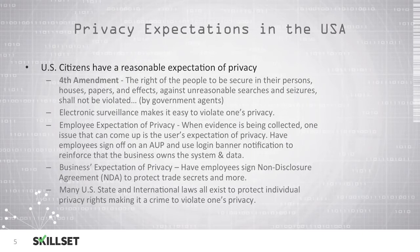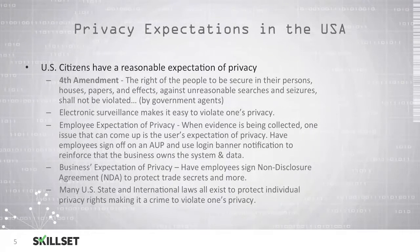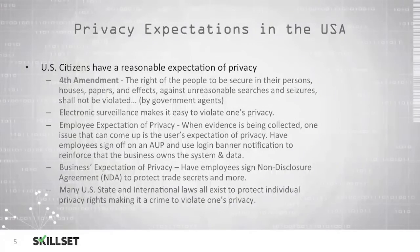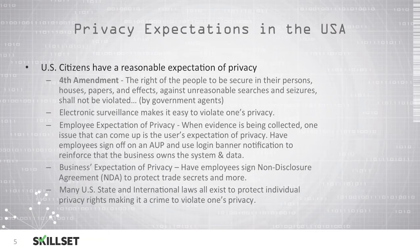United States citizens are used to having a reasonable expectation of privacy provided by the Fourth Amendment, which provides that the people should be secure in their persons, houses, papers, and effects from unreasonable searches and seizures by government agents. You should be familiar with the Fourth Amendment for the CISSP examination. Electronic surveillance makes it easy to violate an individual's privacy and appears to be less intrusive because we're not entering the employee's home. It is important to make sure that your employees have a proper expectation of privacy in the workplace. If you are collecting data on your employees, they should have signed off on an acceptable use policy prior to accessing your systems, and you should have a reminder like a login banner to notify them that they don't have any right to privacy on the system, and that the business owns the system and any data that's contained on or processed using the system.